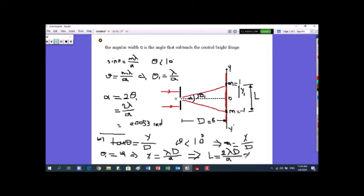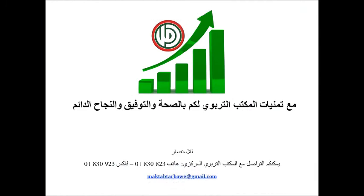And if you do the calculation, of course Y1 equals 2 times lambda times D over A, which gives the final numerical result for the width of the central bright fringe.